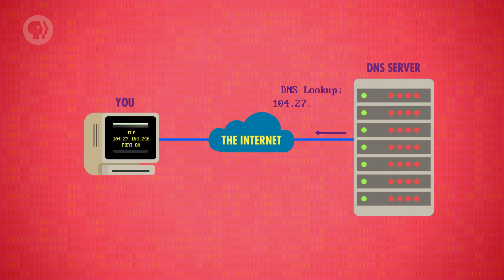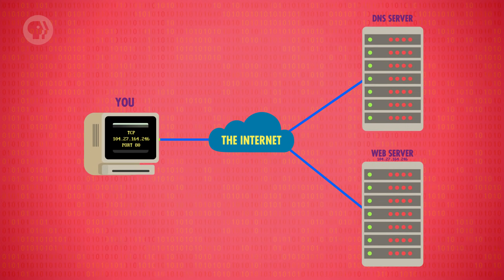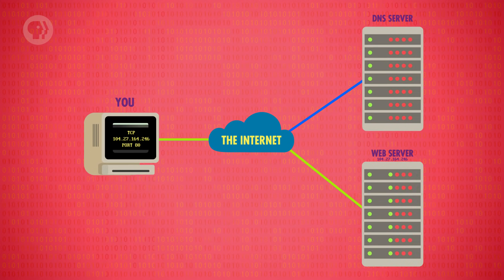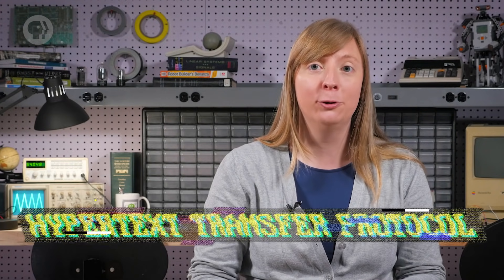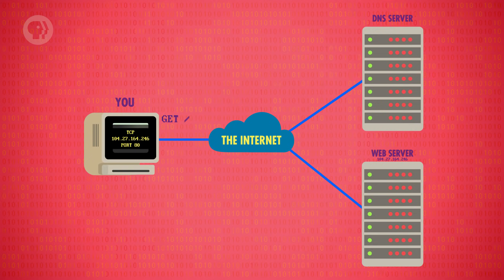Armed with the IP address of the computer you want, your web browser opens a TCP connection to a computer that's running a special piece of software called a web server. The standard port number for web servers is port 80. At this point, all your computer has done is connect to the web server at the address thecrashcourse.com. The next step is to ask that web server for the courses hypertext page. To do this, it uses the aptly named Hypertext Transfer Protocol, or HTTP. The very first documented version, HTTP 0.9, created in 1991, only had one command — GET. Because we're trying to get the courses page, we send the server the command: GET /courses.